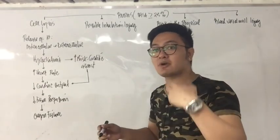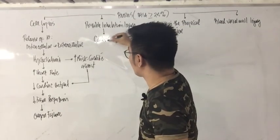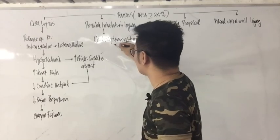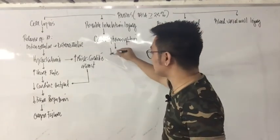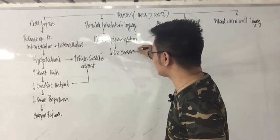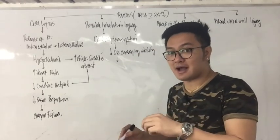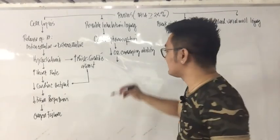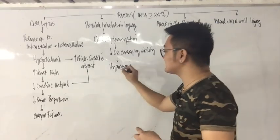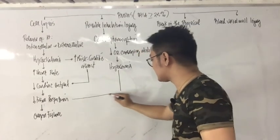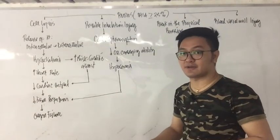With possible inhalation injury, remember carbon monoxide poisoning. When the patient inhales carbon monoxide, a condition called carboxyhemoglobin occurs, decreasing the blood's ability to carry oxygen. This causes hypoxemia — decreased oxygen in the blood — which results in decreased tissue perfusion and again leads to organ failure.